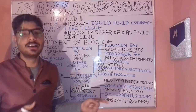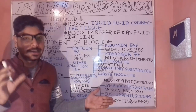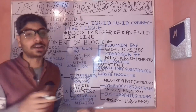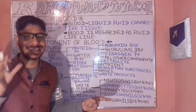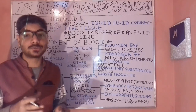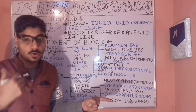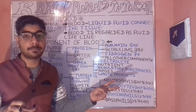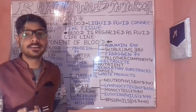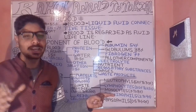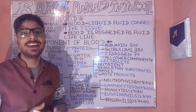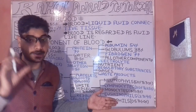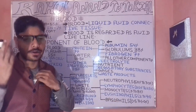White blood cells, known as leukocytes, have a shorter lifespan compared to red blood cells — around 4 to 5 days. Red blood cells (erythrocytes) have a lifespan of around 120 days.